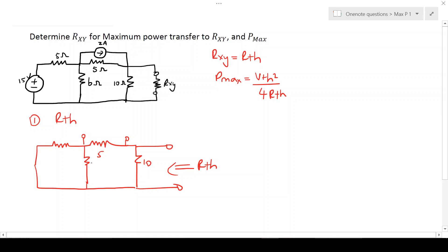Once I've redrawn the circuit, I can then start to determine the type of connections that we have. We should be able to see here that the 6 and the 5 are connected in parallel. They share two common nodes.